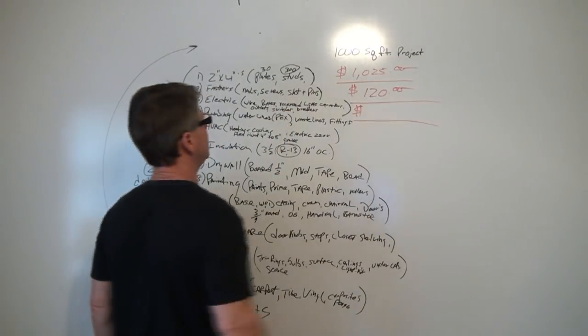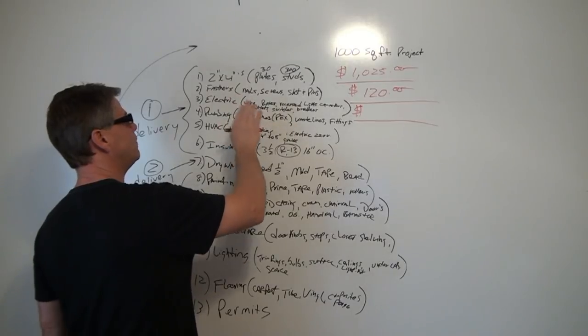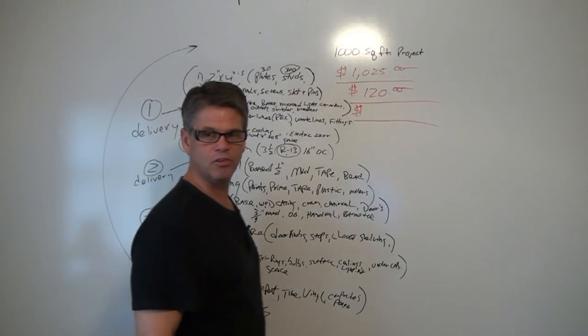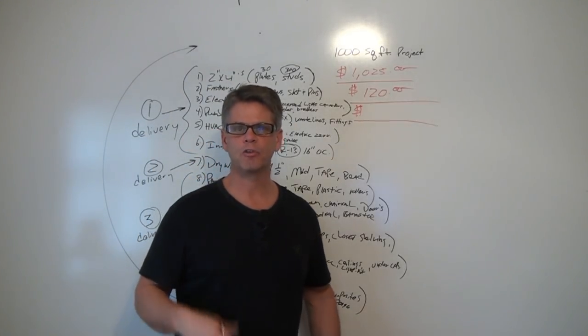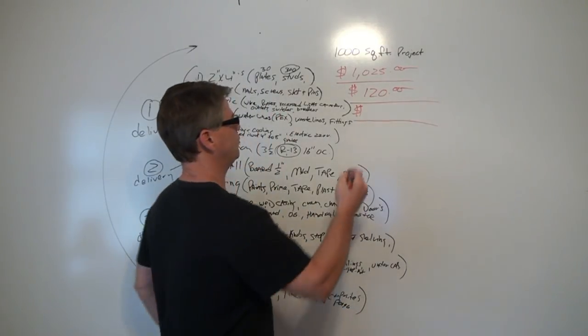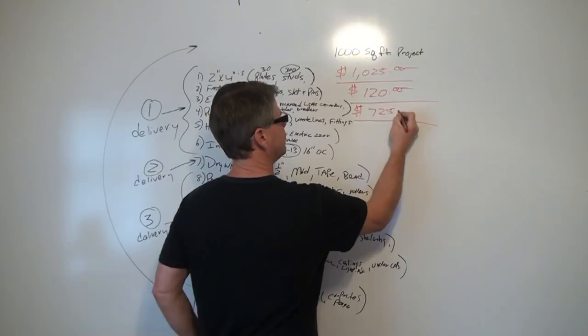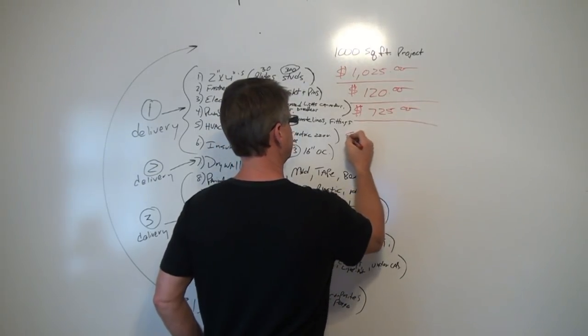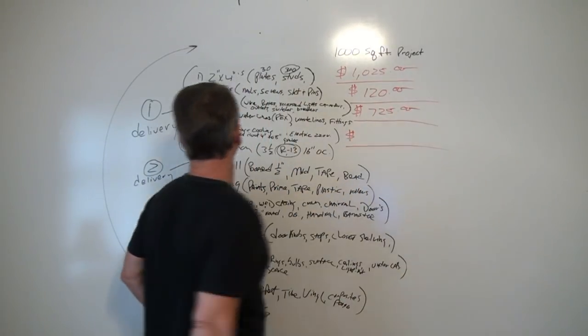Next, we've got the electric. That's all my wire, my boxes, recessed lights, switches, outlets, breakers, all that good stuff. Everything to do a typical thousand square foot basement to code. $725 in materials.